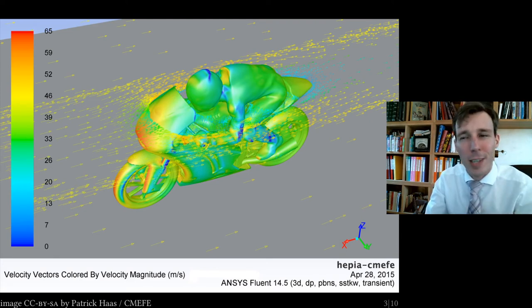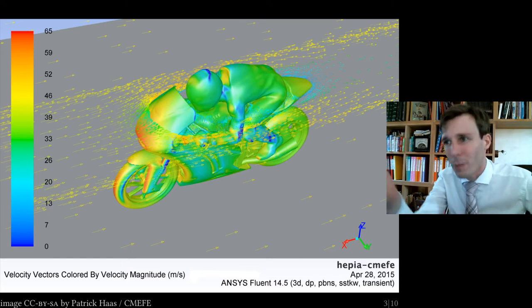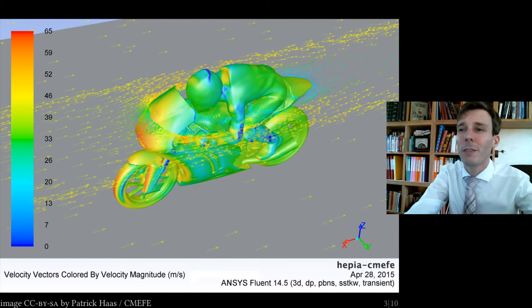From this you can deduce the distribution of pressure and shear on objects like this motorbike here. It's all very nice, beautiful—usually the colors are just extraordinary. So how does it work?